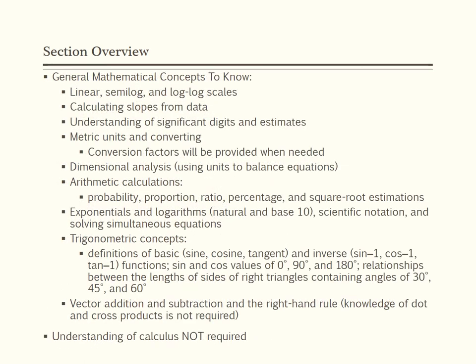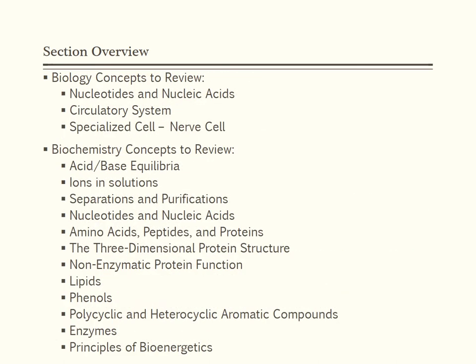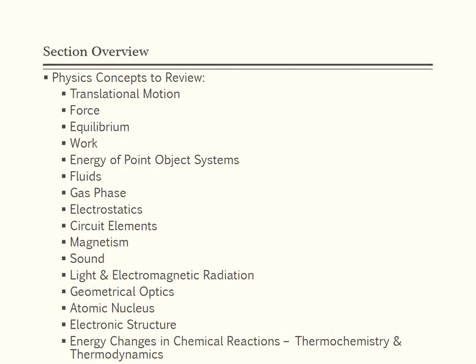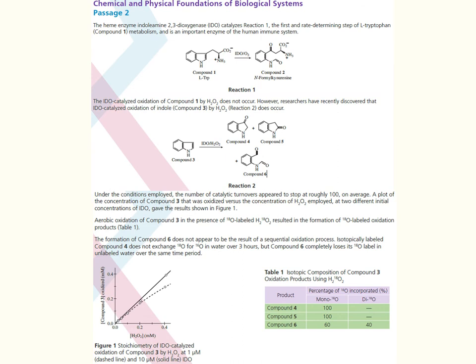Below is a list of basic math concepts you should be familiar with for the MCAT. Note that an understanding of calculus is not required. The next three slides provide brief lists of concepts covered in the various areas of the MCAT, including general and organic chemistry concepts such as solubility, atomic nucleus, electrochemistry, and lipids, as well as physics concepts. Below you will find a passage from the Chemical and Physical Foundations of Biological Systems section — take a couple of minutes to review it and then answer the question on the next slide.